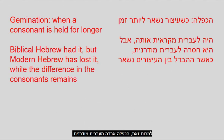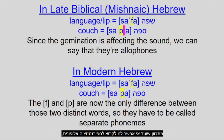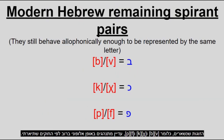However, modern Hebrew has lost gemination, meaning we can no longer call spirantization allophonic since it has now become a distinguishing feature between certain words in that position. The pairs that remain — namely Bet/Vet, Kaf/Khaf, and Pe/Fe — still behave mostly allophonically according to those rules.